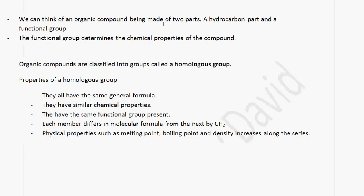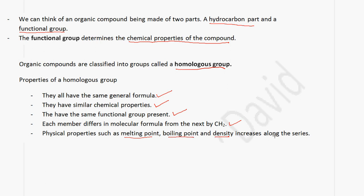An organic compound is made up of two parts: it consists of a hydrocarbon part and a functional group. The functional group is what determines the chemical properties of the compound. Organic compounds can be classified into groups called a homologous group. This homologous group has several properties: they all have the same general formula, similar chemical properties because they all have the same functional group, and each member differs in molecular formula from the next by CH2. Physical properties such as melting point, boiling point, and density increase along the series.